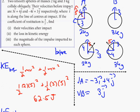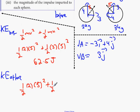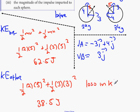It's going to be a half 2 times 5 squared - stays exactly the same before and after. The other one is half 3 times 3 squared. That's 38.5 joules. What's your loss in kinetic energy? Take them away from each other. Your loss in kinetic energy is 24 joules.